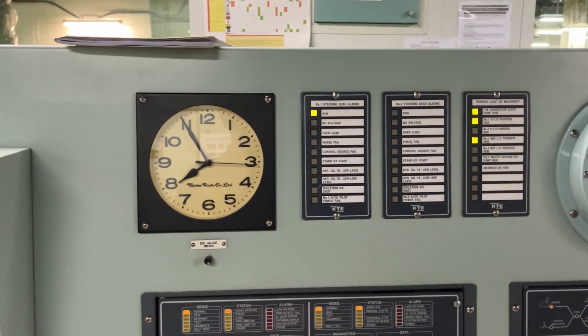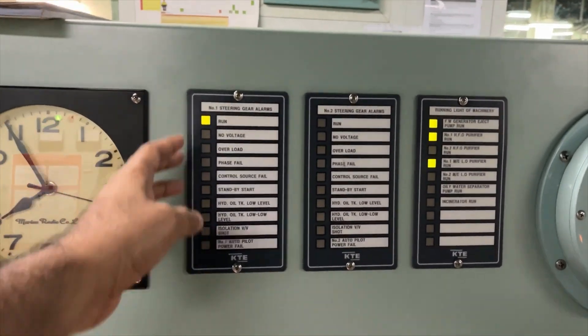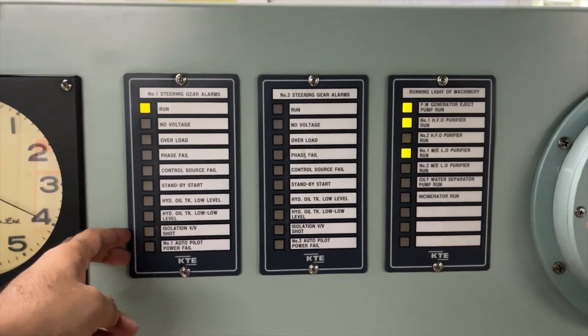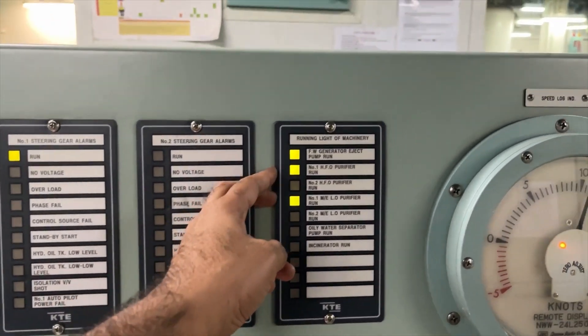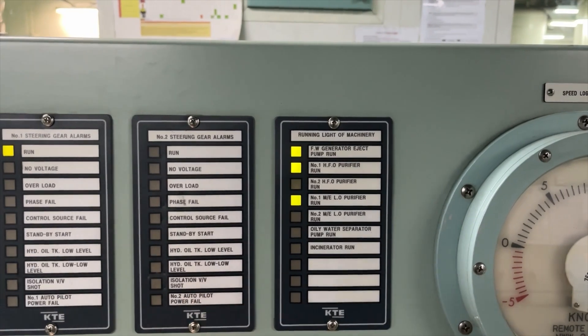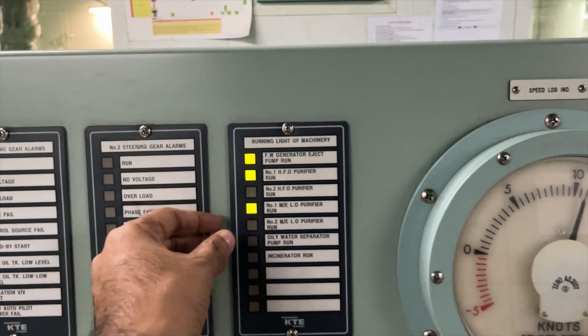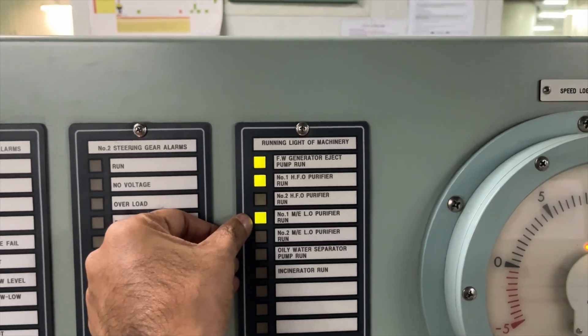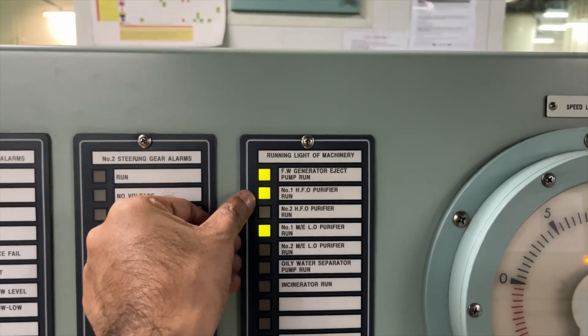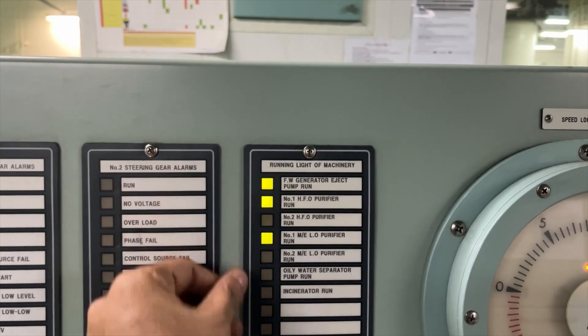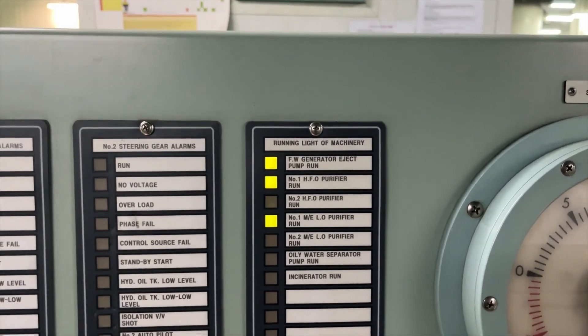On top you will find clock and this is number one steering gear alarms, number two steering gear alarm and few of the indications for running machineries. You can see here if number one is running, number one lube oil purifier running, number one HFO purifier running and the fresh water generator.